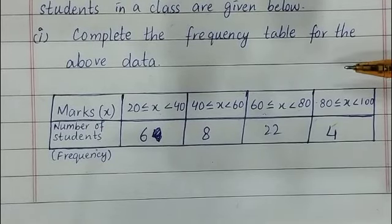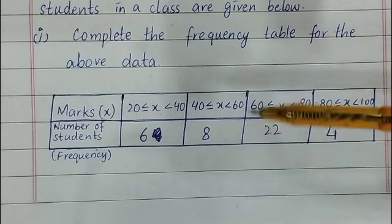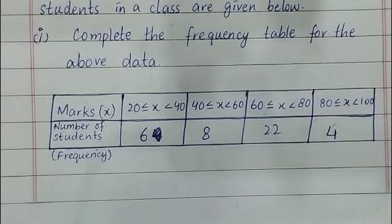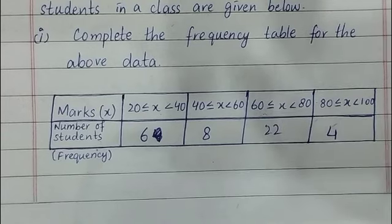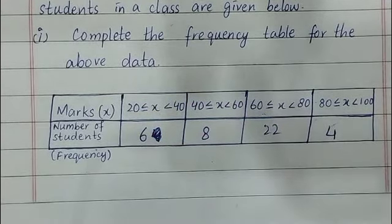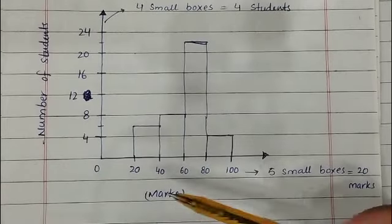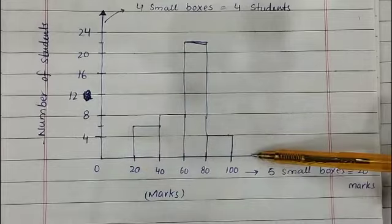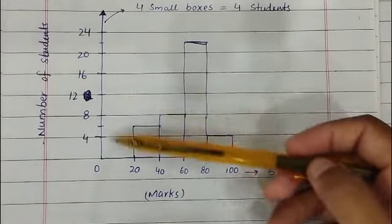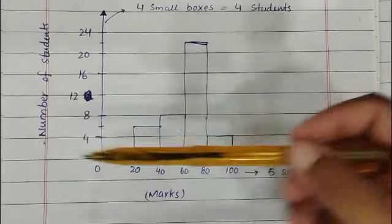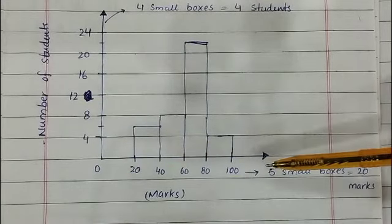Assalamualaikum. This is the continuation of part B of question number 16. In the first part we drew the frequency table. Now we are going to draw the histogram and represent this data in a histogram. A histogram is basically a bar graph. On the y-axis you write the number of students, which is also the frequency, and on the x-axis you place the marks.